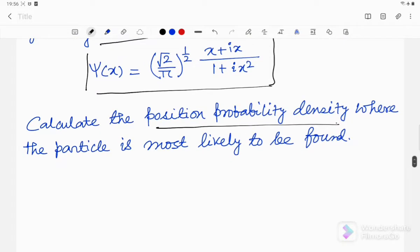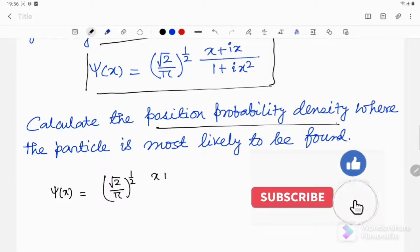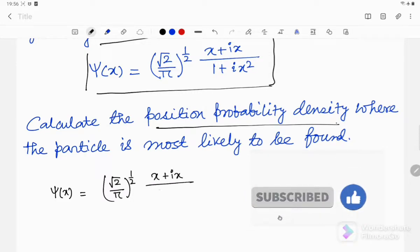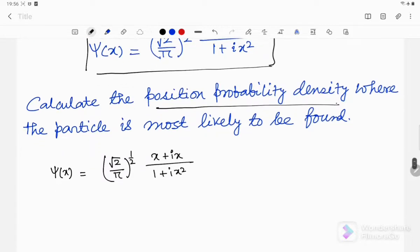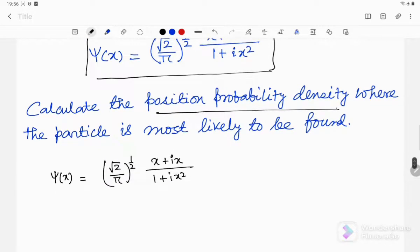So let's start. We have our wave function ψ(x) = √(2/π) to the power 1/2 times (x+ix)/(1+ix²). Note that if I put x = 0, then ψ(x) will be 0, so we have to remember that.